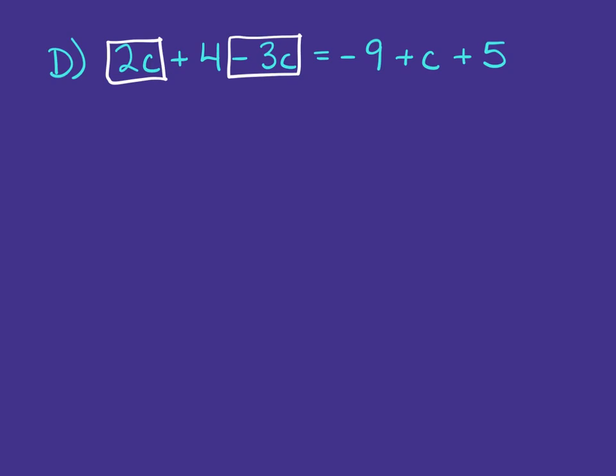Notice on the left side that we have like terms 2C minus 3C, which equal negative C. And we'll bring down that plus 4 on the left side. Notice on the right side that we have like terms negative 9 plus 5. So we bring down the C and negative 9 plus 5 is negative 4. So now we've got an equation negative C plus 4 equals C minus 4, where we have a term that includes a variable on both sides of the equation.